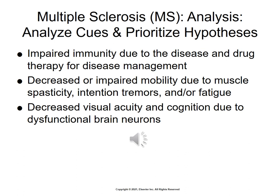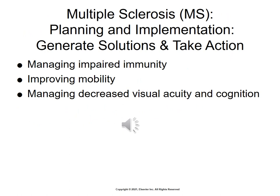The priority nursing care hypotheses for your patient with MS include: impaired immunity due to the disease and drug therapy; decreased or impaired mobility due to muscle spasticity, intentional tremors, and/or fatigue; and decreased vision acuity and cognition due to dysfunction of brain neurons. There is no cure for MS — management focuses on relieving symptoms and delaying progression of disease.